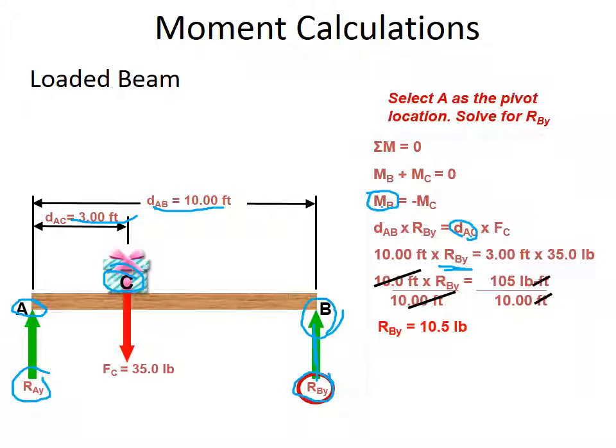Now, I can apply the sum of the forces in the Y direction because I know that C is minus 35. I know that B is 10.5 going up. And when I apply this equation and solve, plug in and solve, I end up with RAY is 24 and a half. So, now, a double check is if I add RAY and RBY, they should add up to 35. And they do.